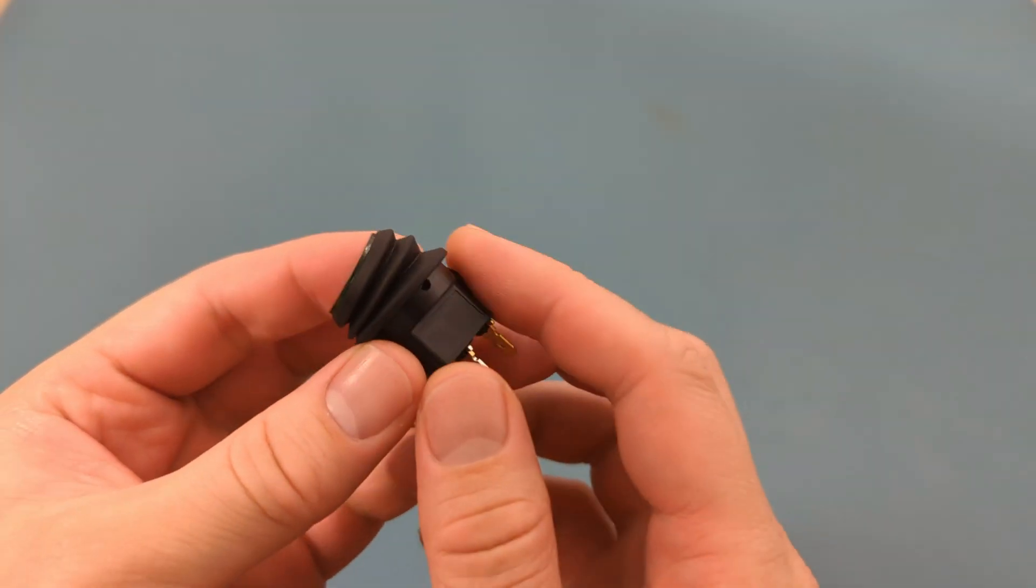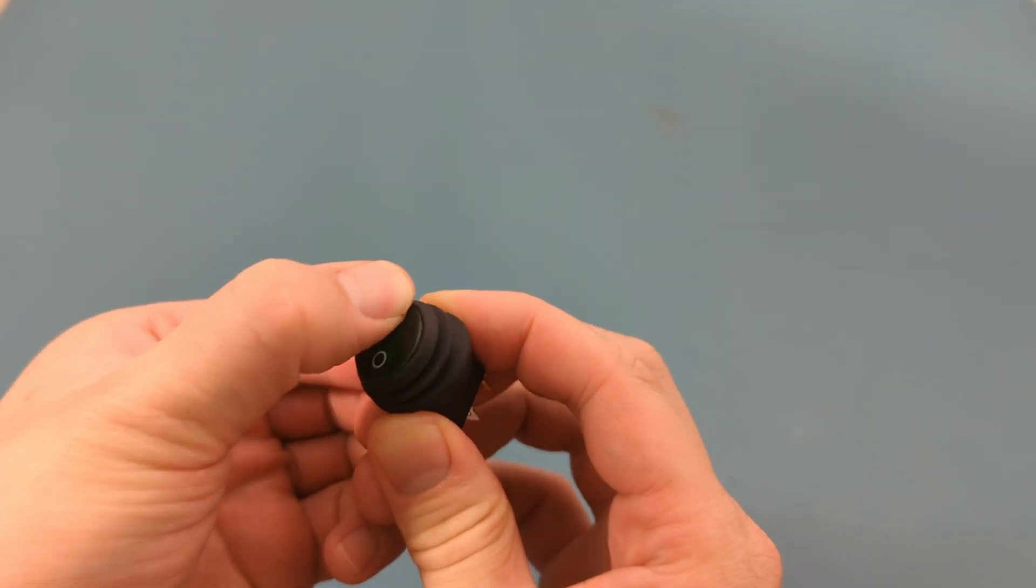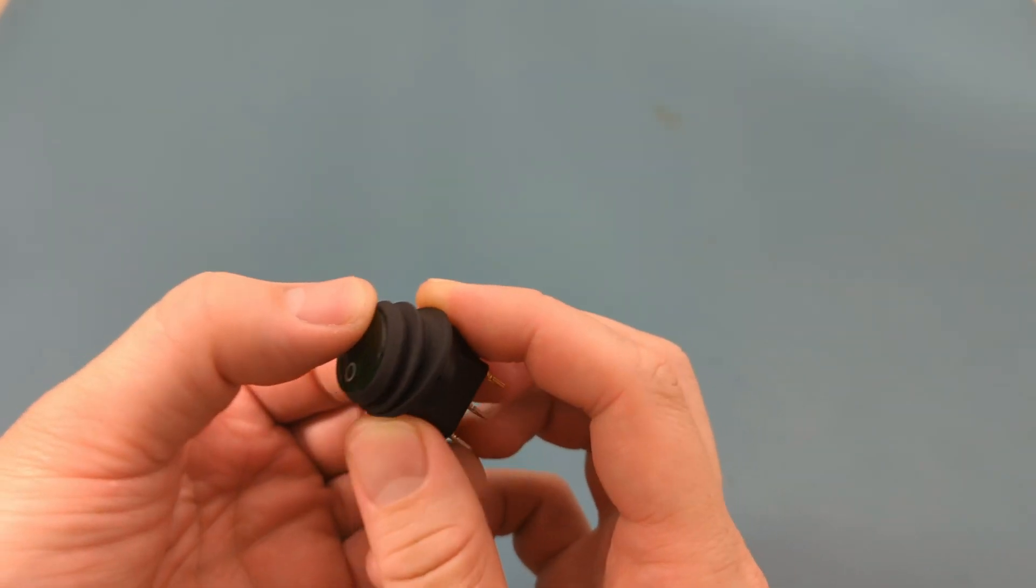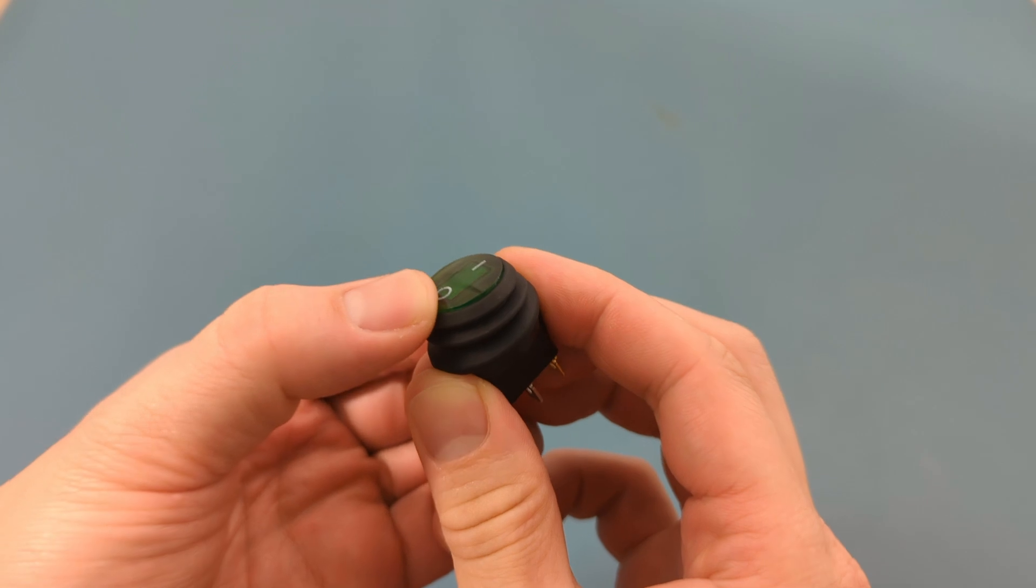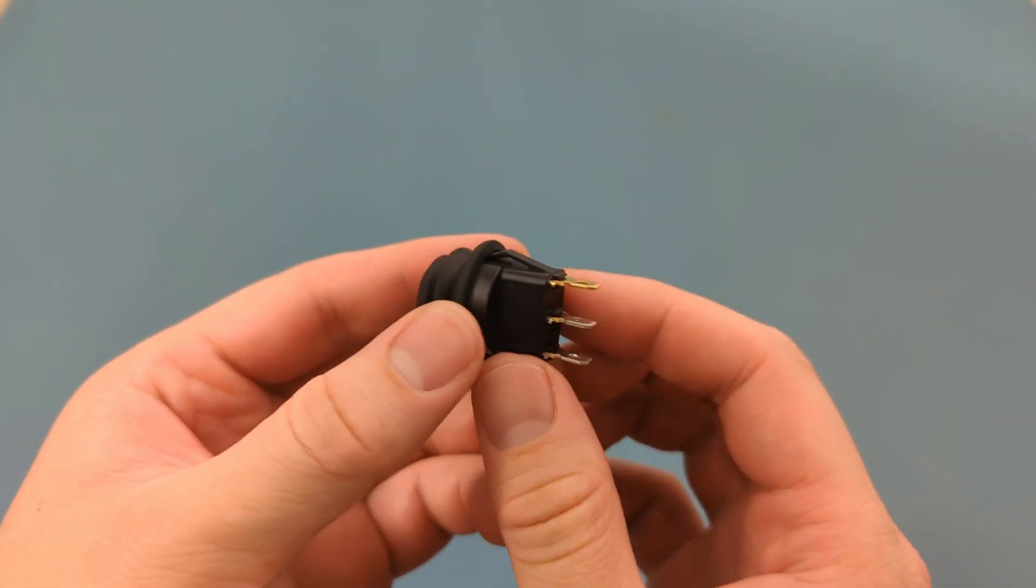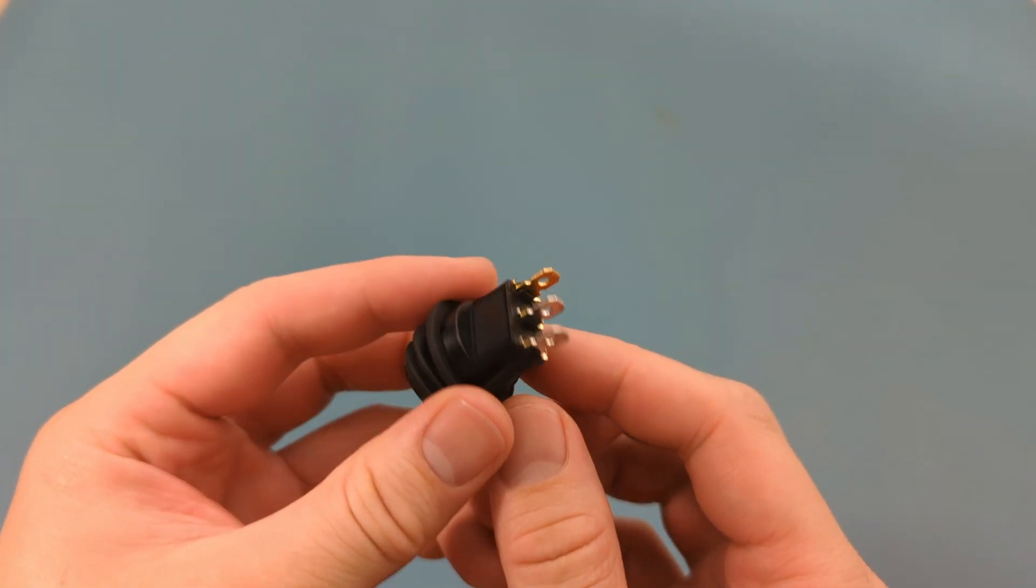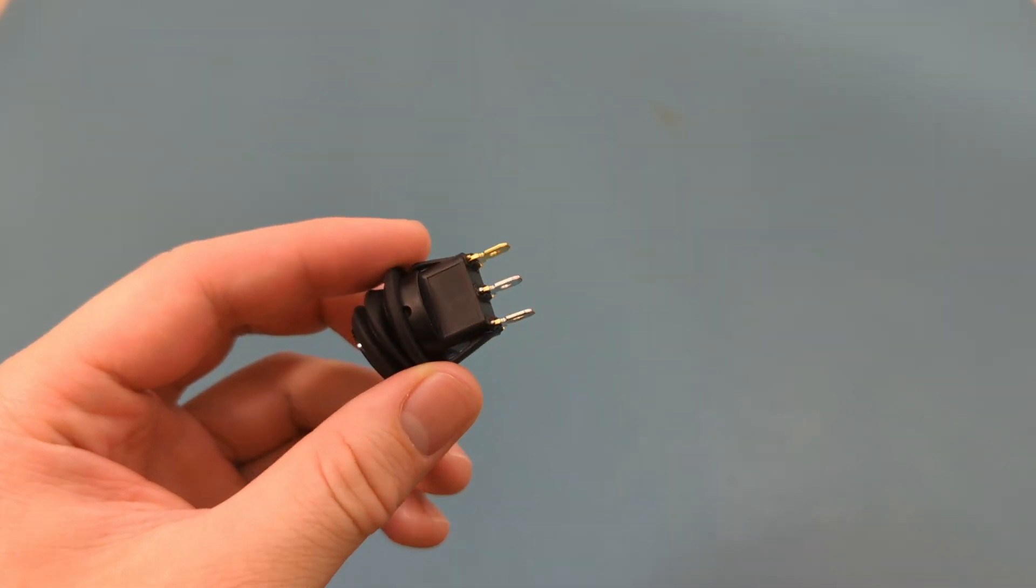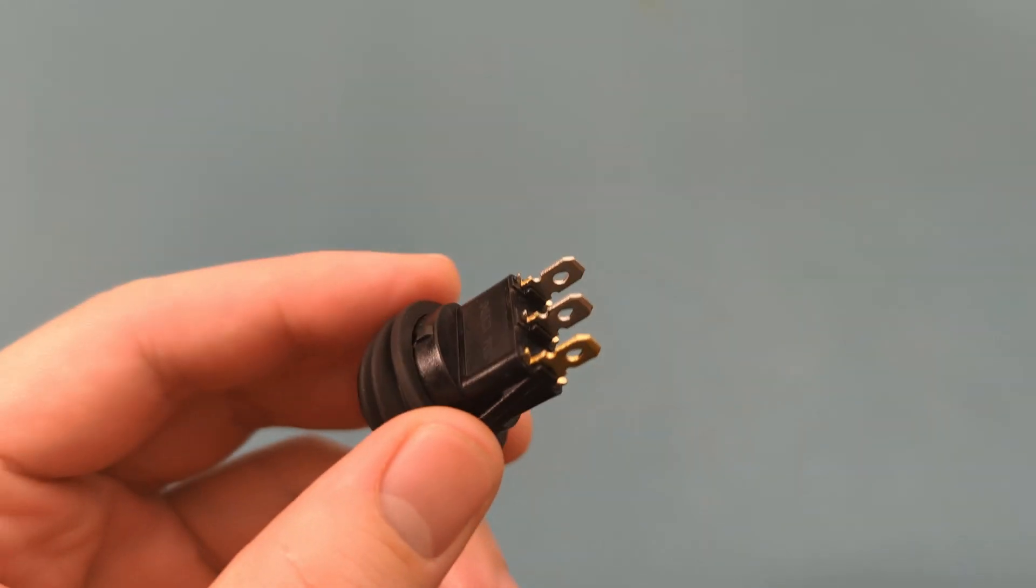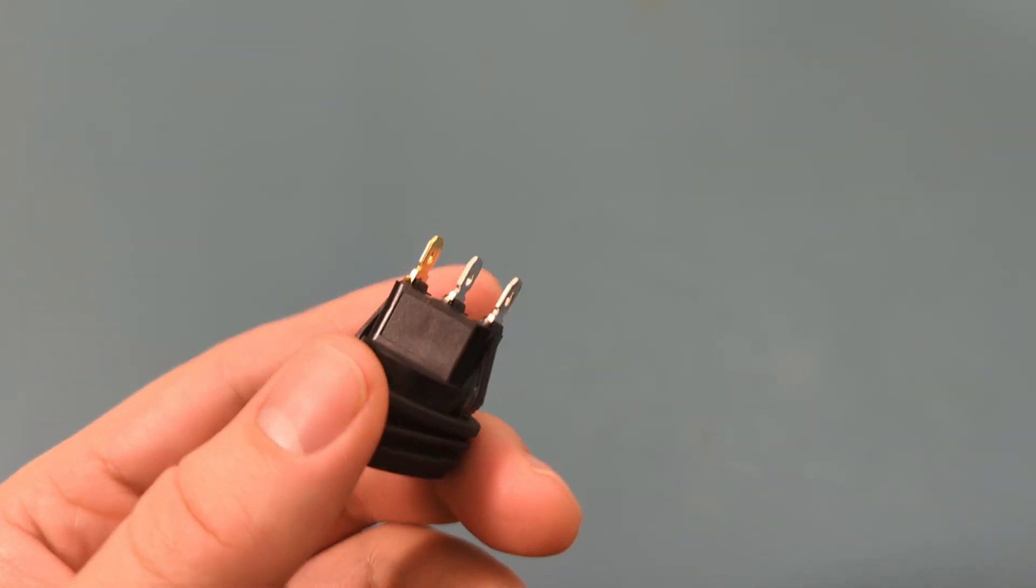This is a two position switch. You have the on position and the off position. To test this switch, check for continuity between the positive and negative pins connected to the power supply. For this particular switch, the positive is the middle pin and the negative is the bottom pin. The top pin is for the load. Refer to the instruction manual for your specific switch, as the pin positions may vary.